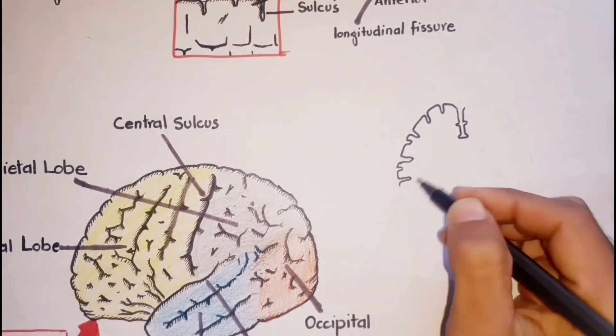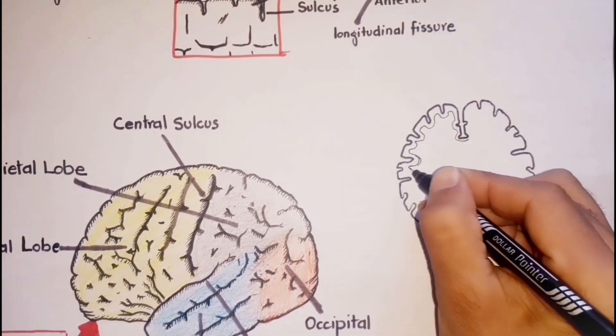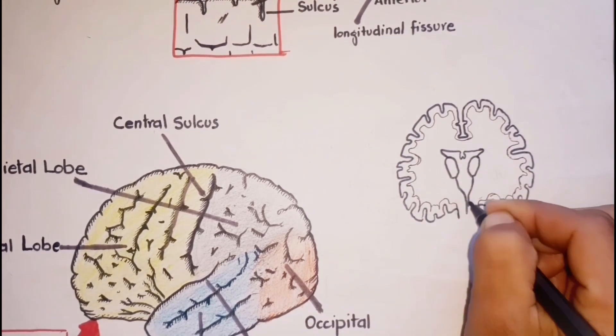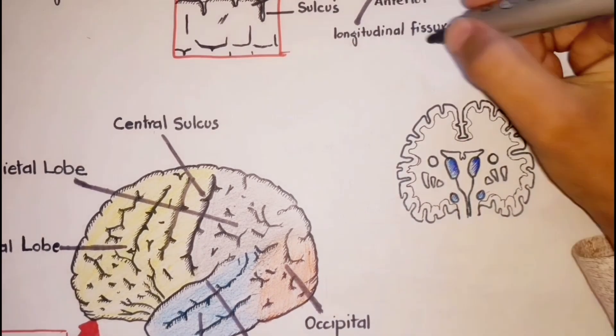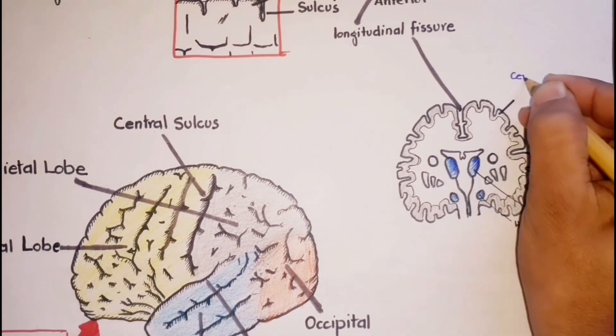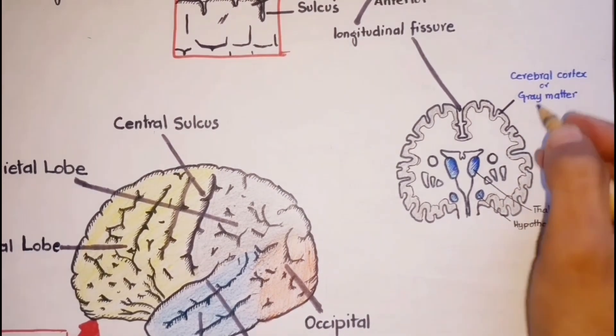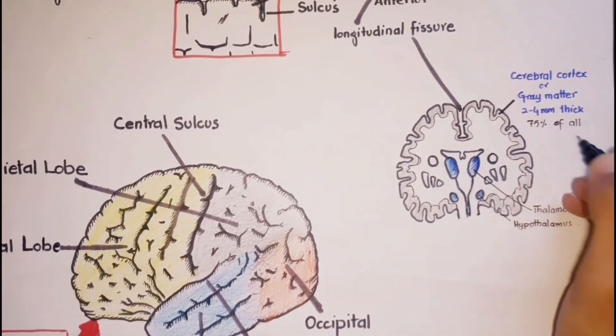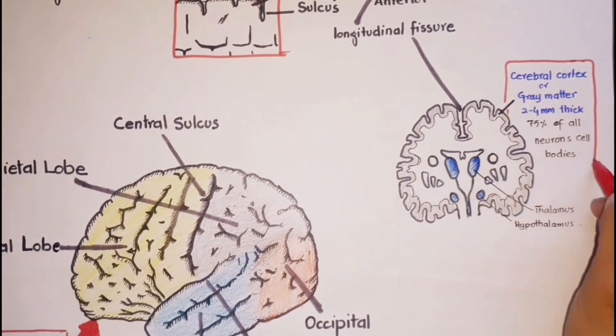The cerebrum has two layers. Here I'm drawing the coronal section of the brain, a mid-section between the anterior and posterior. This is the longitudinal fissure, which is more prominent here. This thin layer is called the cerebral cortex or gray matter, the outermost part of the cerebrum having thickness of about 2 to 4 millimeters. It has nearly 75% of all the neuron cell bodies in the nervous system.